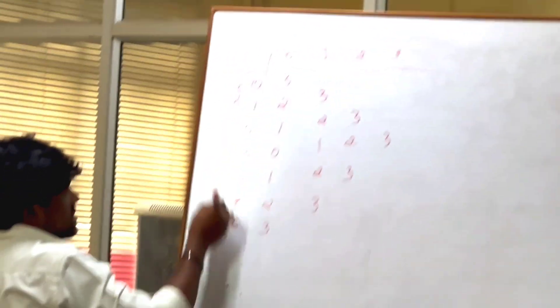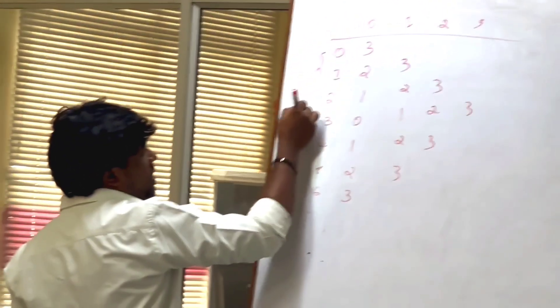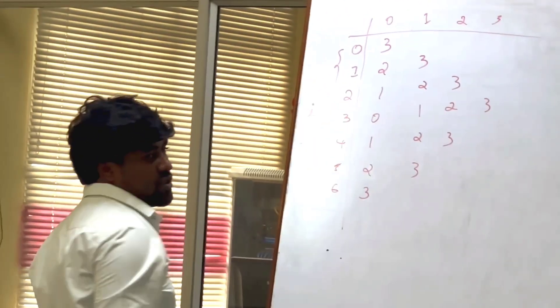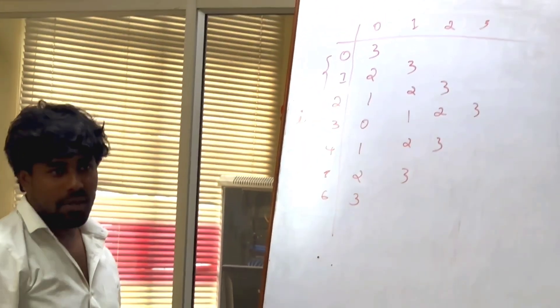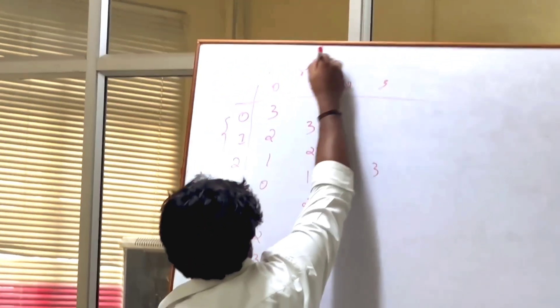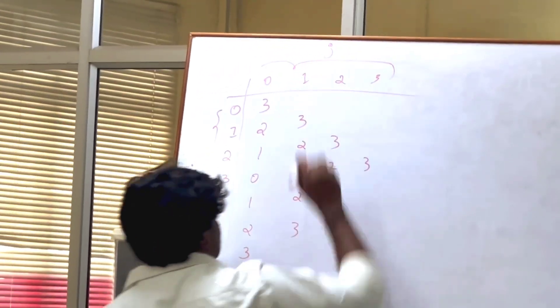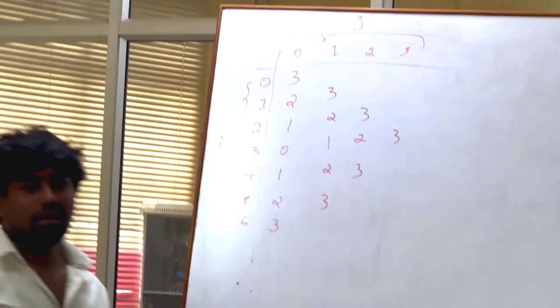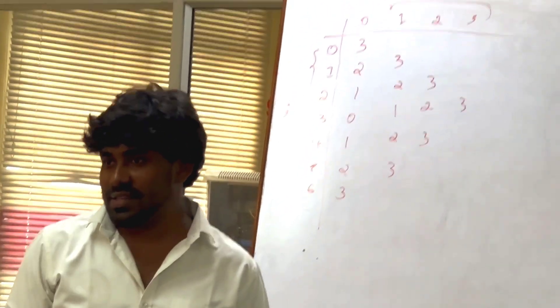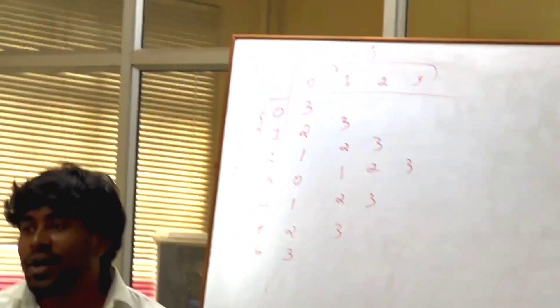I want to hold a series of these numbers. That's the reason I want to give you a variable. That's the reason I will use — what? I. Here also I want to hold a series of variables, that's the reason I will use — what? J. I will use J as a series.